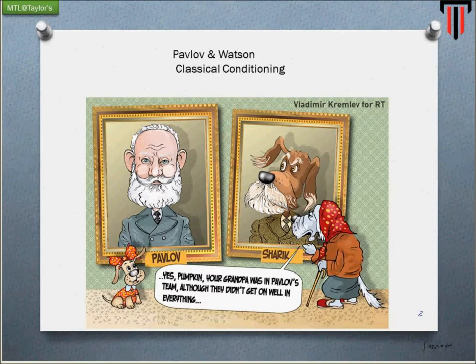What Pavlov did was introduce food to a dog. Every time the dog was hungry, food was introduced, and just before eating, the dog would salivate because of its appetite. He then systematically introduced the sound of a bell alongside the food. The dog associated the bell with feeding time, so in a subsequent experiment, when the bell was rung without food being present, the dog still salivated. The food was the unconditioned stimulus producing salivation, but a neutral stimulus — the bell — was able to replace the food as the stimulus. This demonstrated how a neutral stimulus could be introduced to produce the same response.